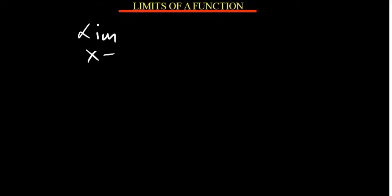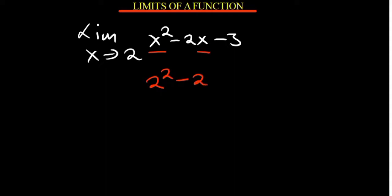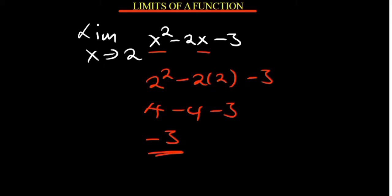Let's say you have been given a function and you're asked to determine the limit as x approaches 2. The function is x squared minus 2x minus 3. When you're dealing with limits, all you have to do is plug in the value of x. So you're going to have 2 squared minus 2 multiplied by 2 minus 3, which reduces to 4 minus 4 minus 3. Your answer will be negative 3. So that is the limit as x approaches 2 for that function.